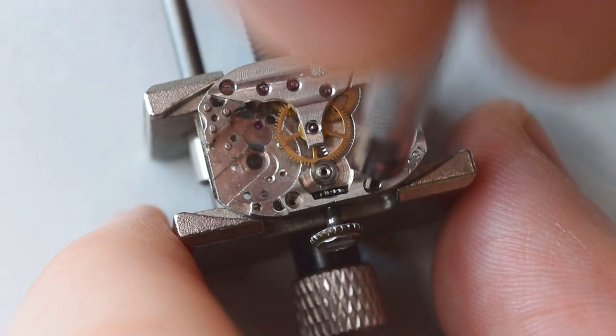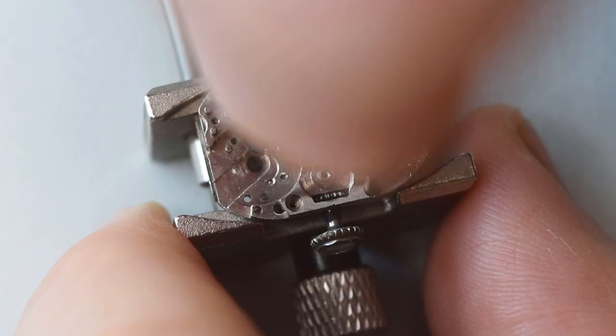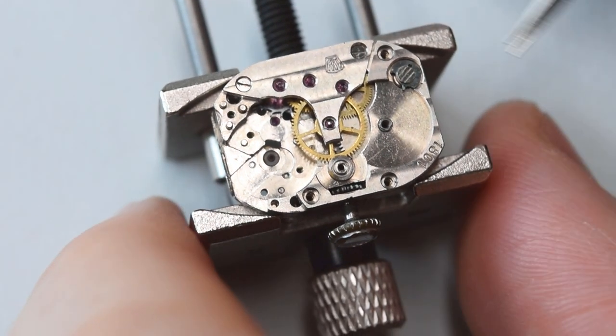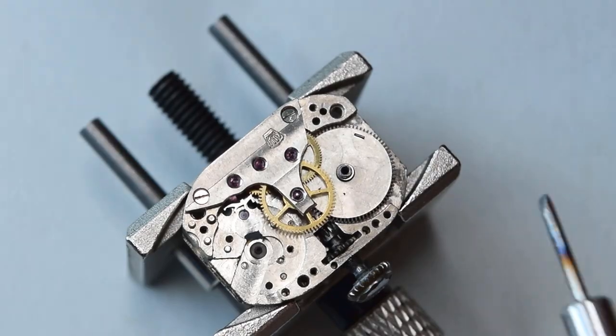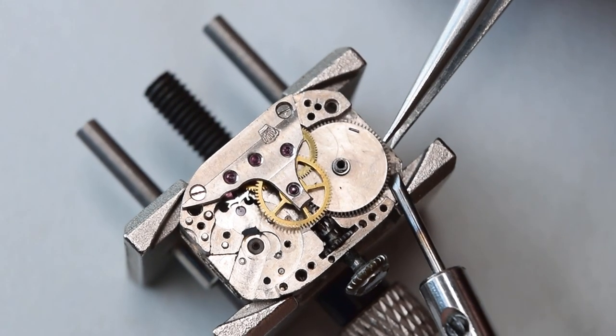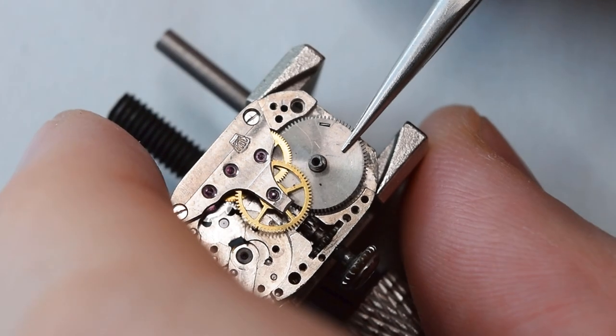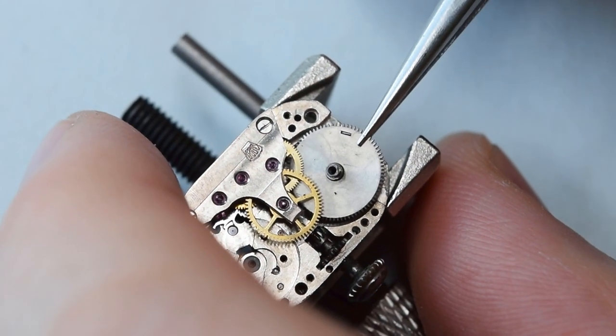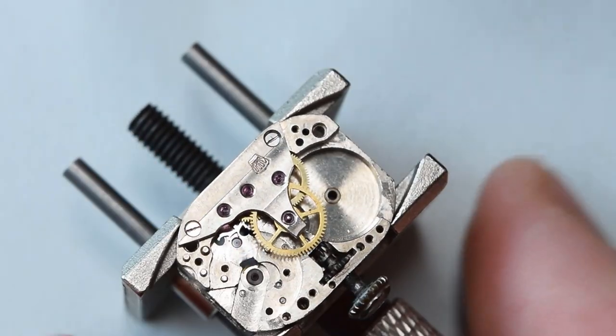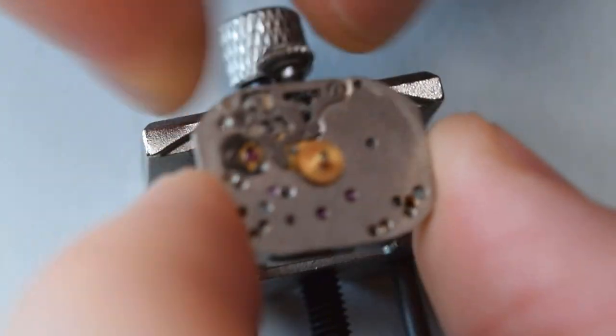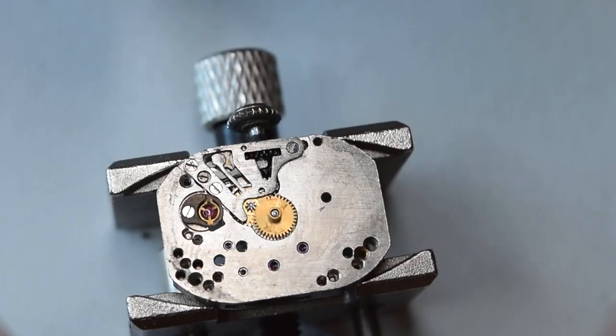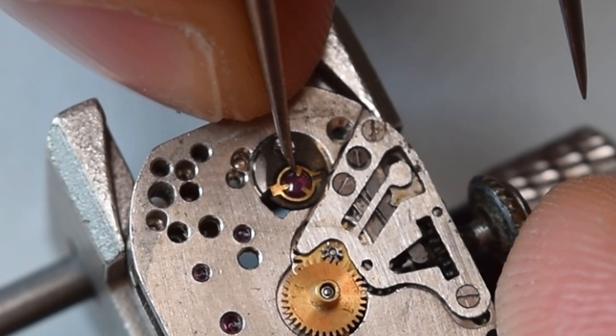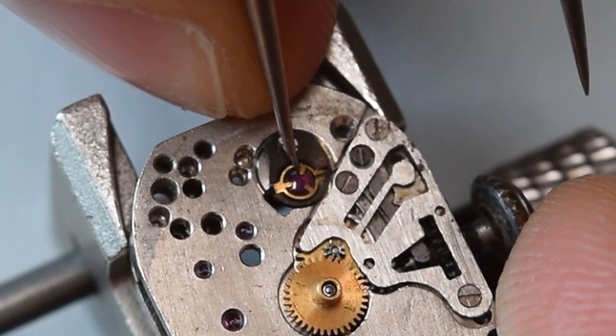My screwdriver is a little bit magnetized, and when you're doing this it actually helps. The bridge is out. I will take out the mainspring barrel. On the power bridge there was a number 18-0-1, and that's the caliber movement that has shock protection. The one that was here originally, 18-0-0, was without it.